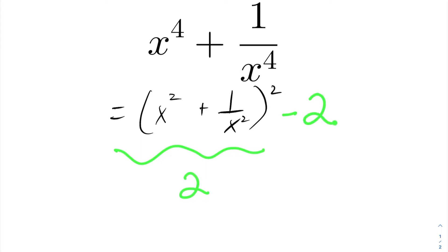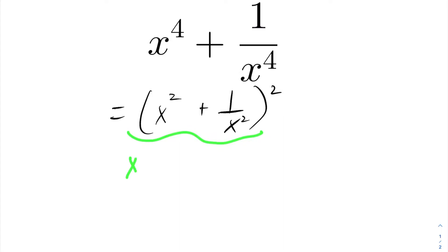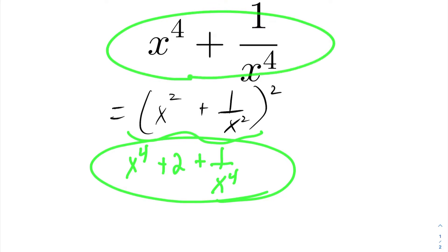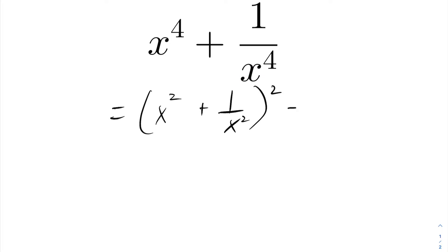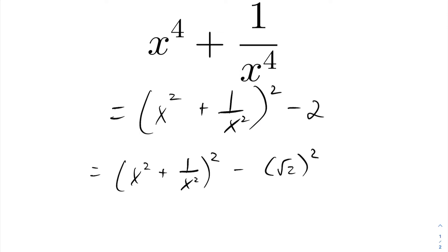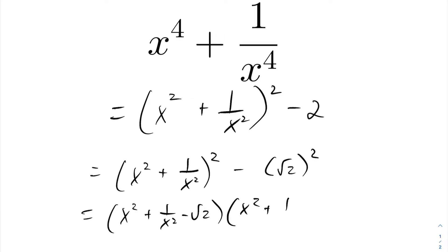This is an incomplete square. Expanding it gives x to the fourth plus 2 plus 1 over x to the fourth, which is not equal to our original expression. To fix it, we subtract 2, rewrite that as the square root of 2, quantity squared, and now we have a difference of squares. This factors as x squared plus 1 over x squared minus root 2, times x squared plus 1 over x squared plus root 2. That is fully factored.